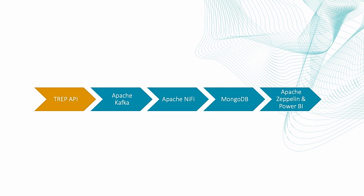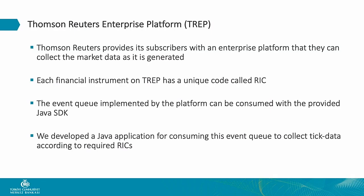MongoDB is not a native component of the HDP stack, but we had it available and used it to store the tick data. We provided our users with access to Apache Zeppelin, and since Power BI is free for the desktop version and has a connector available, we made some experiments with it as well. Thomson Reuters, which our bank subscribes to, has an enterprise platform called TRAP that provides an event queue. Each financial instrument traded on this platform has a unique code called a RIC — Reuters Instrument Code — and we used the Java API to consume messages from this platform.